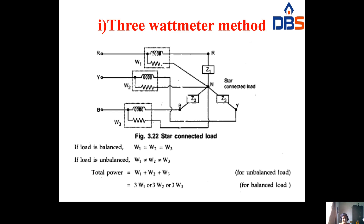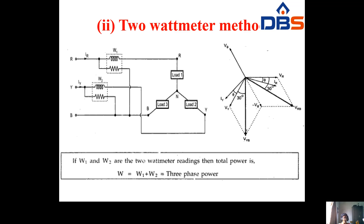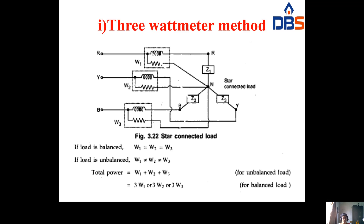For unbalanced load, the total power is W1 + W2 + W3. For balanced load, all three readings are equal, so the total power becomes 3×W1, or 3×W2, or 3×W3. This is the method to find three-phase AC power using the three wattmeter method.